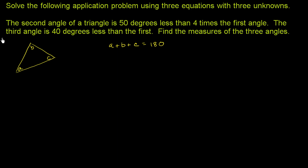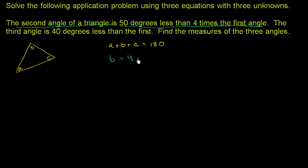Now let's look at these other constraints. They tell us the second angle of a triangle is 50 degrees less than four times the first angle. So B is the second angle. Four times the first angle would be 4A — we're calling A the first angle — but it's 50 degrees less than that, so B equals 4A minus 50.